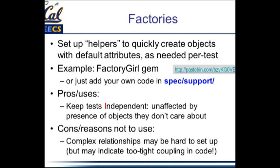One possible reason not to use factories is that complex relationships might be hard to set up. For example, once we start talking about associations — movies, moviegoers, and reviews — you might need a factory for movies, a factory for reviews, and link them together. But when you find yourself thinking down that path, what it really means is there's something about your code that doesn't allow them to be decoupled. If two objects are so tightly related that you can never use one without the other, that's a signal you need to provide abstraction to manipulate them separately, which would improve testability.